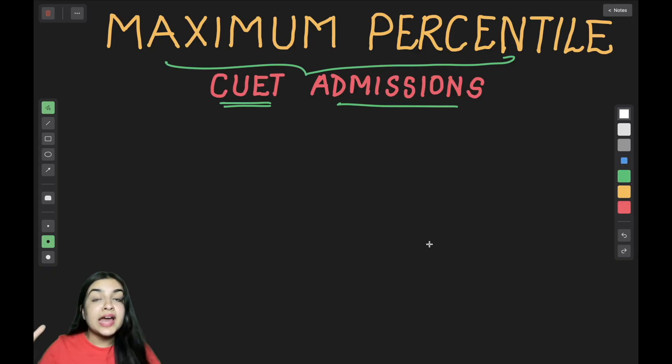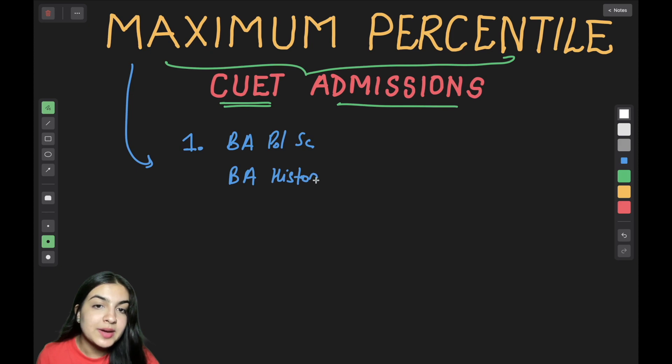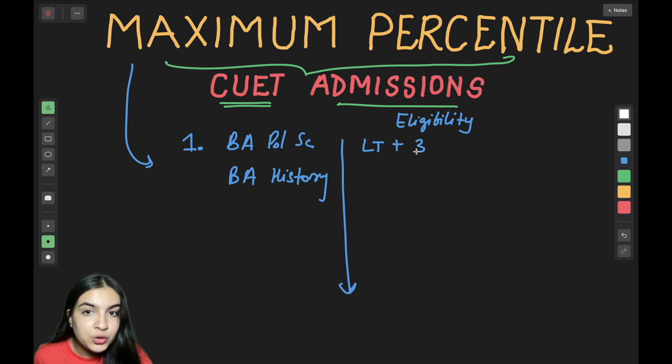Now, talking about maximum percentile, the first step is to be clear with the subjects. First of all, the courses you are targeting should be clear: my first priority is BA Political Science Honors, second priority is BA History Honors, and then whatever priority list you have to make. Whatever eligibility criteria there is, such as the DU information bulletin, that you have to give a test, such as BA Political Science requires Language Test plus three domain-specific tests.